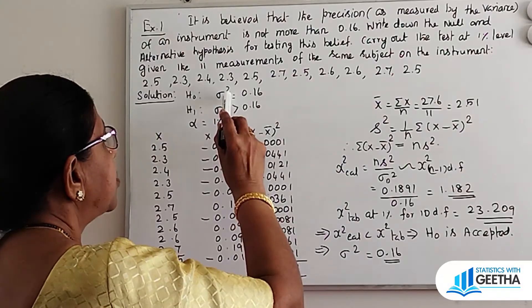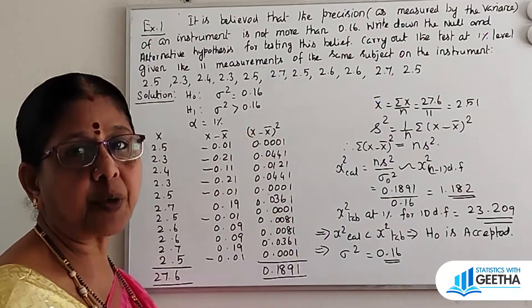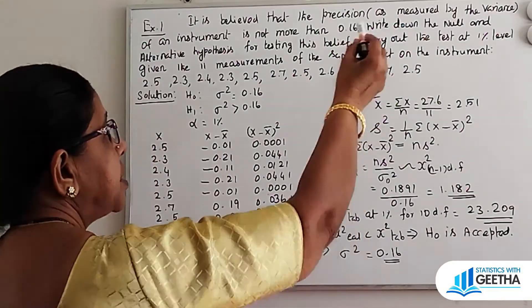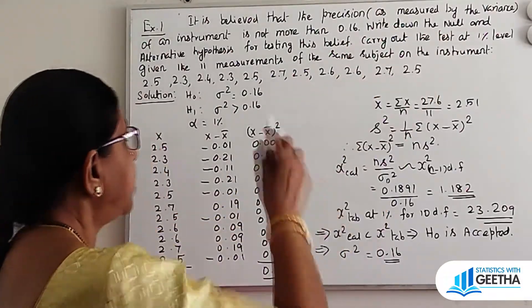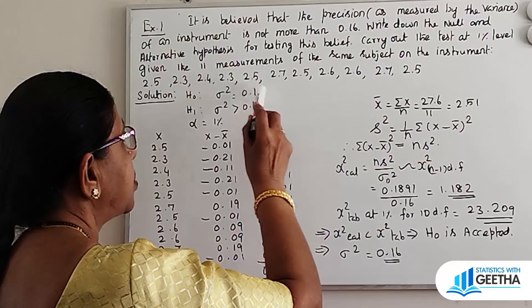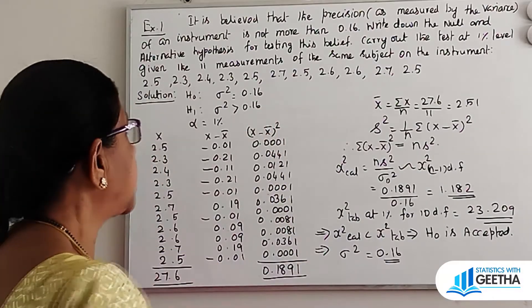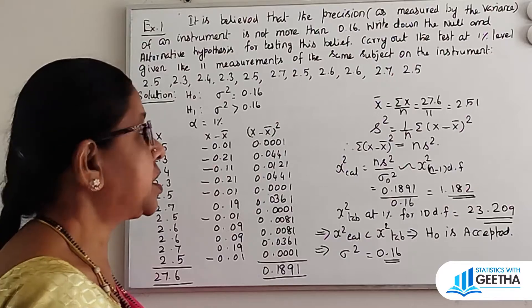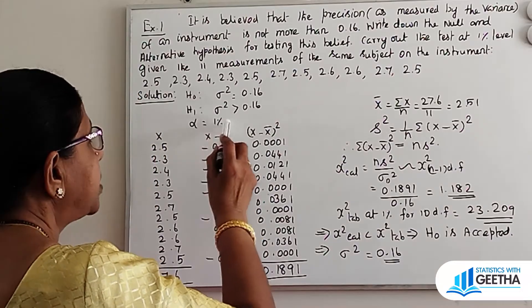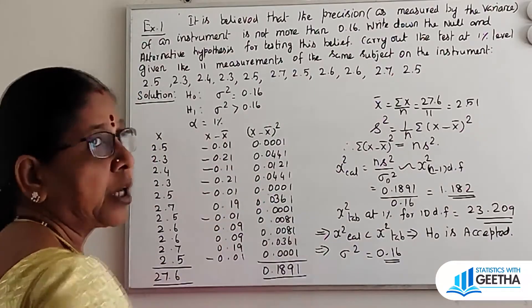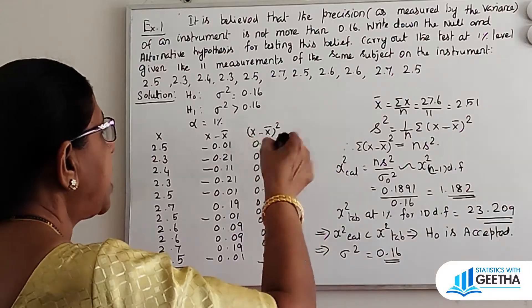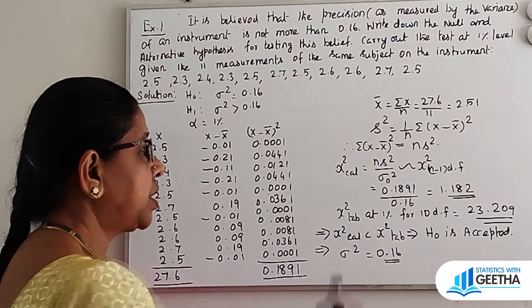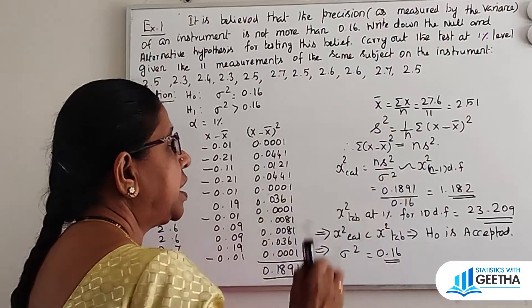Solution: H0 sigma square equal to 0.16. Precision is measured by the variance, so the variance equals 0.16. H1: sigma square greater than 0.16. Alpha is 1%. Given the sample values, we apply the chi-square test with formula N S square by sigma square.